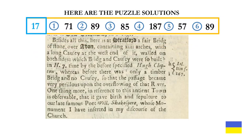Here are the puzzle solutions. The first counts and gematria sum are all 17. Then for equation 1 we got 71, equation 2: 89, equation 3: 85, equation 4: 187, equation 5: 57, and equation 6: 89 again.